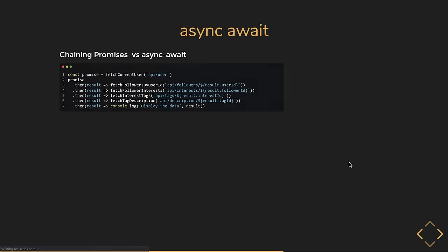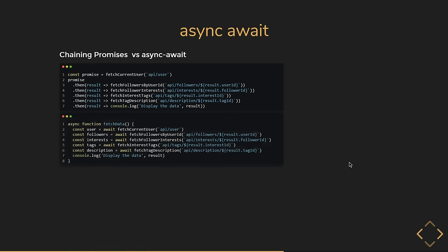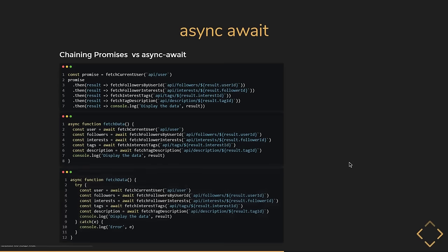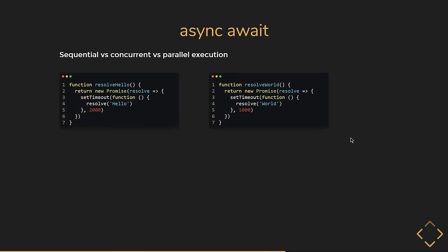Going back to the promise chaining example, we can rewrite it using async/await. The code resembles synchronous code and is even more readable than a promise chain. Error handling is also simplified — you can simply use try-catch blocks like you would with synchronous code.